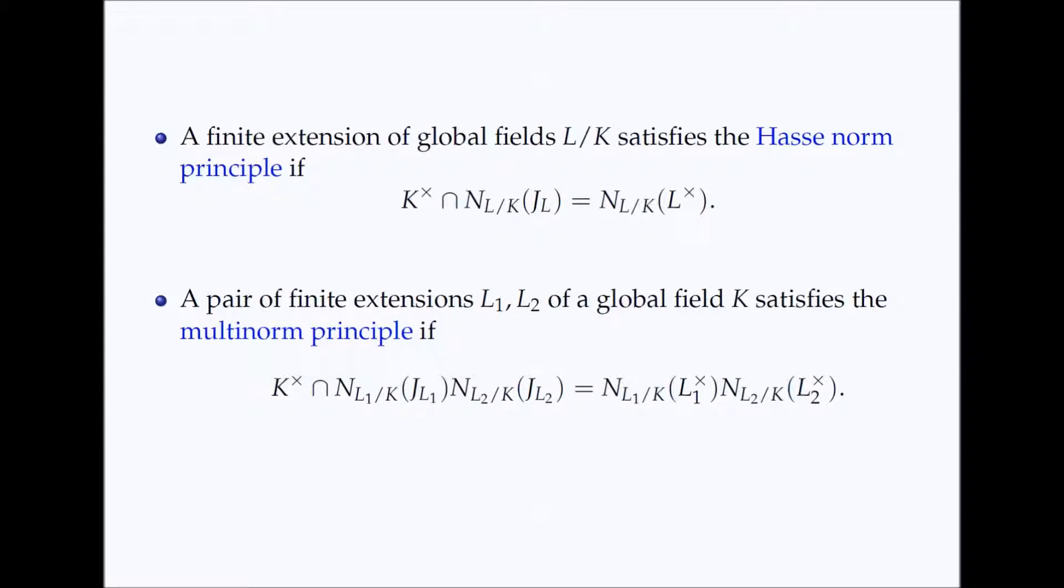The Multinorm Principle is a local global principle for products of norms, which generalizes the Hasse norm principle. We say that a finite extension of global fields L over K satisfies the norm principle if every element of the multiplicative group of K that is the norm of an idele is actually the norm of an element from the field L.